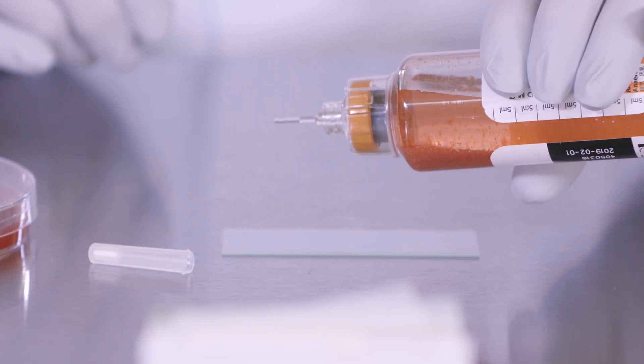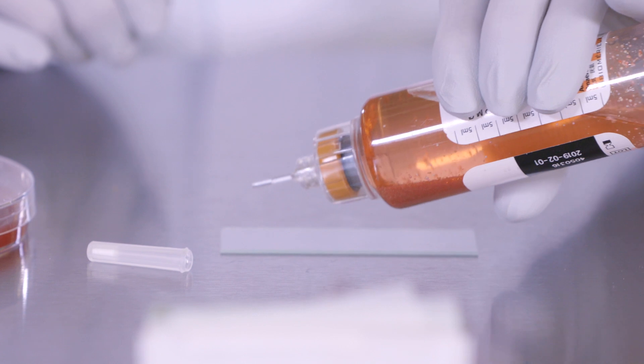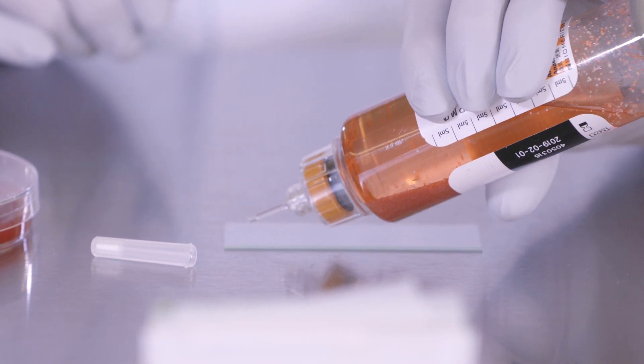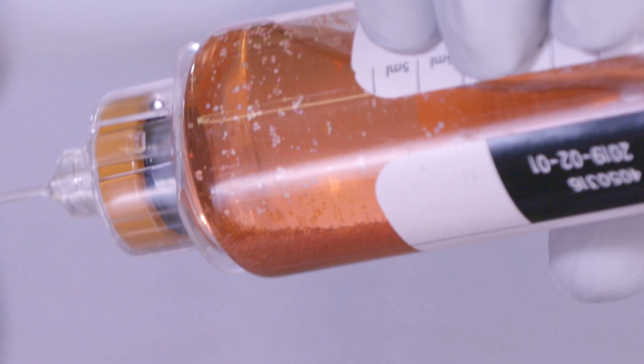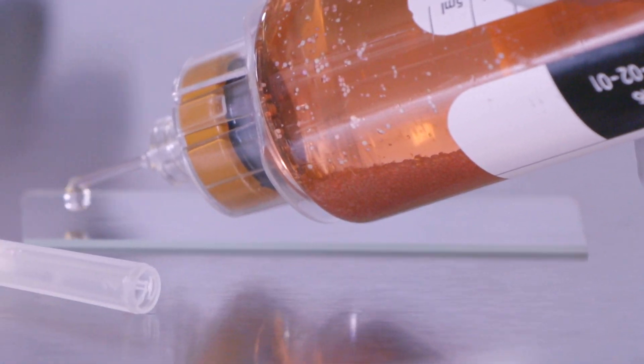For bottles that contain resin beads, angle the bottle so that the resin beads gather along the side of the bottle. This prevents the resin beads from obstructing the SCU-2 piercing tip.